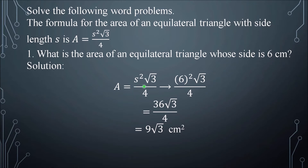Substitute 6 for s. So that's 6 squared times √3 over 4. 6 squared is 36. Simplifying, 36 over 4 is 9. So the final answer is 9√3 cm².